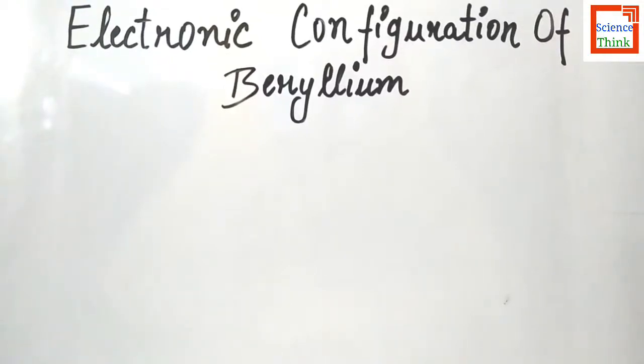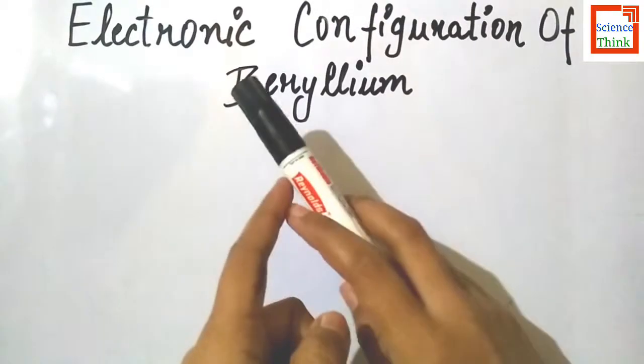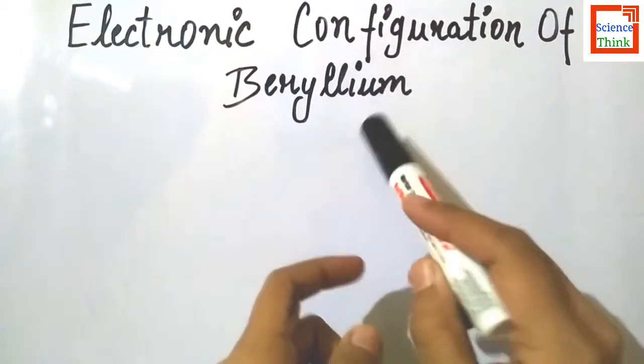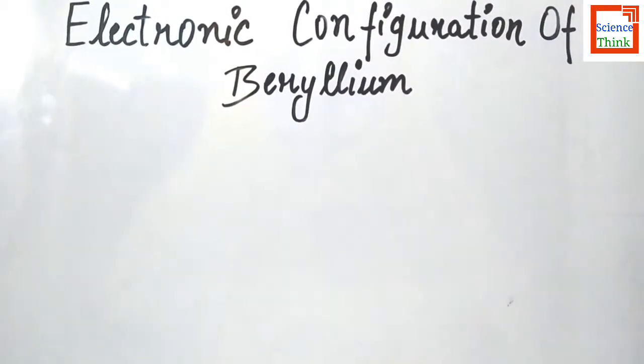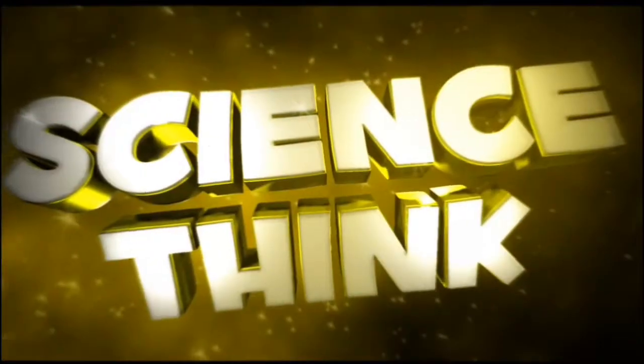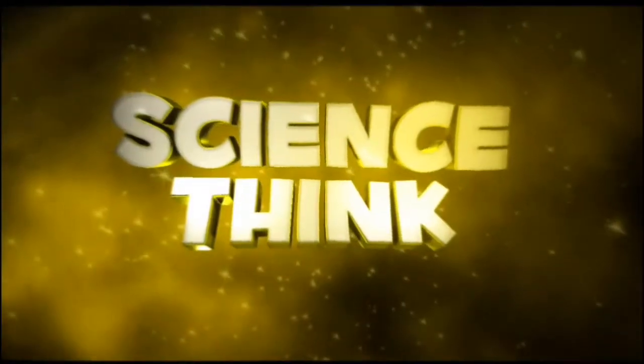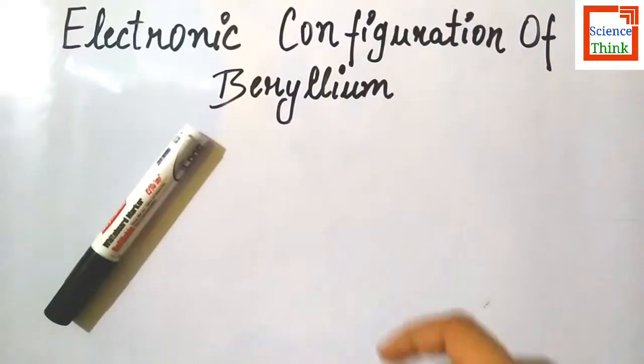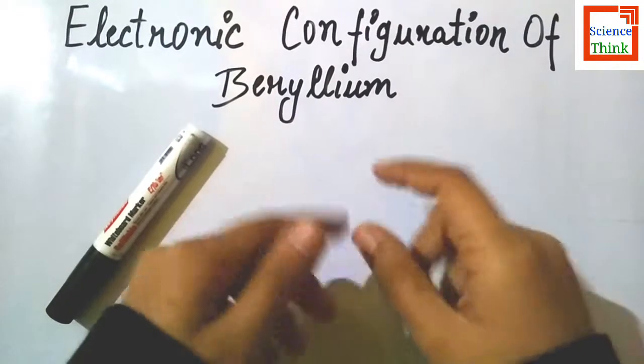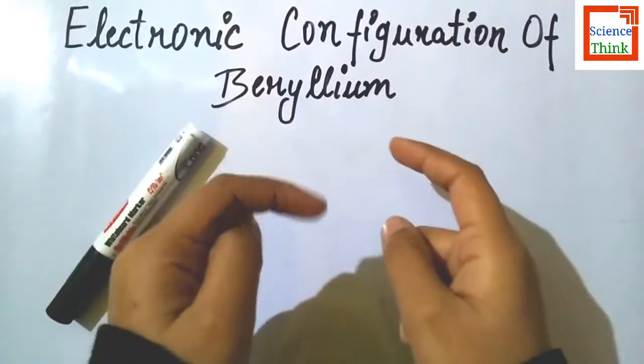Hello friends, welcome to Science Think. In this video I will be showing you how to write the electronic configuration of beryllium. So let's start the video. To find the electronic configuration of beryllium, first we need to find the total number of electrons of the beryllium atom.